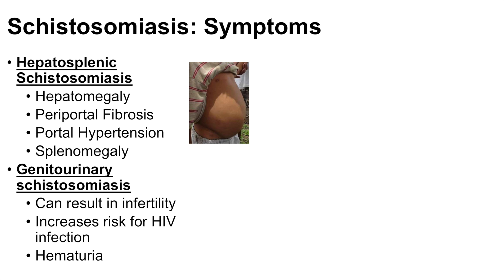Another system that can be infected is the genitourinary system, leading to genitourinary schistosomiasis. This is usually related to an infection with schistosoma haematobium and can lead to infertility in some patients, an increased risk for HIV infection, and hematuria. Eggs can also be excreted in the urine, leading to lesions, which explains the blood in the urine and the increased HIV risk.